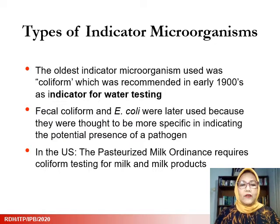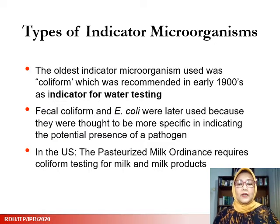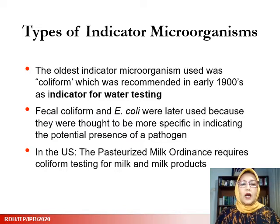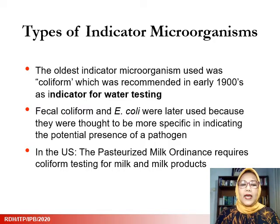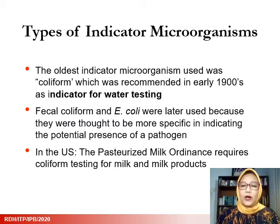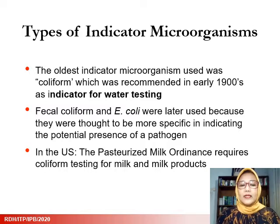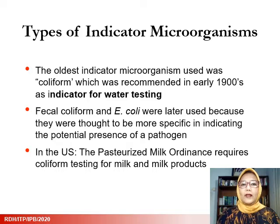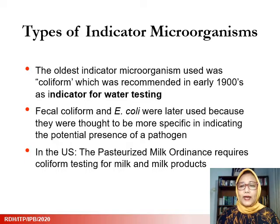There are several indicator microorganisms that have been used or developed since then. The first and oldest was coliform, recommended in the early 1900s as an indicator for water. Fecal coliform and then E. coli were also used because they were thought to be more specific in indicating the potential presence of a pathogen. In the US, the Pasteurized Milk Ordinance requires coliform testing for milk and milk products.